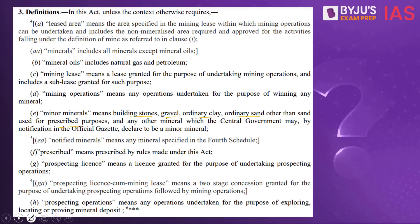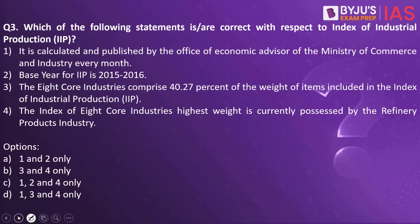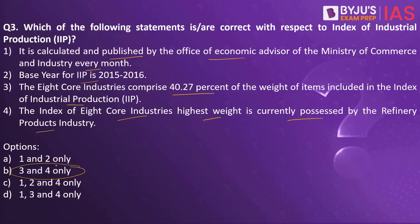Now let's look into the next practice question. Which of the following statements is correct with respect to the Index of Industrial Production? It is calculated and published by the Office of Economic Advisor of the Ministry of Commerce and Industry every month. The base year for IIP is 2015-16. The 8 core industries comprise 40.27% of the weight of items included in industrial production. The index of 8 core industries' highest weight is currently possessed by the refinery products industry. The answer is 3 and 4 only.